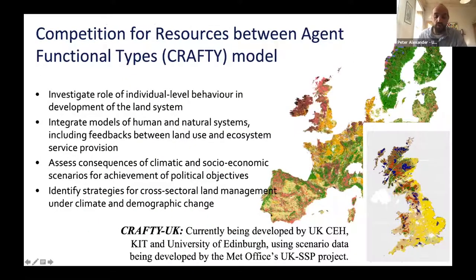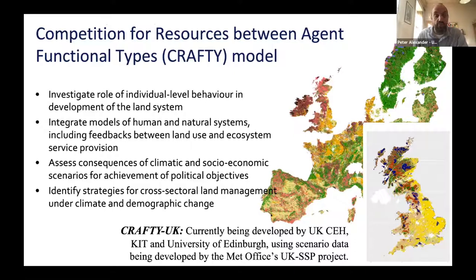Here's a different example of another agent-based model, the CRAFTIE model, which stands for Competition for Resources Between Agent Functional Types. This has been applied both at a European scale as well as some national scales within Europe. CRAFTIE considers supply and demand for a range of ecosystem services, not just provisioning services such as food and timber. Additionally, CRAFTIE can also represent institutional decision-making, for example with endogenous policy-maker agents within the model responding to outcomes as they're simulated. We're currently working on a UK version of CRAFTIE with a number of partners.